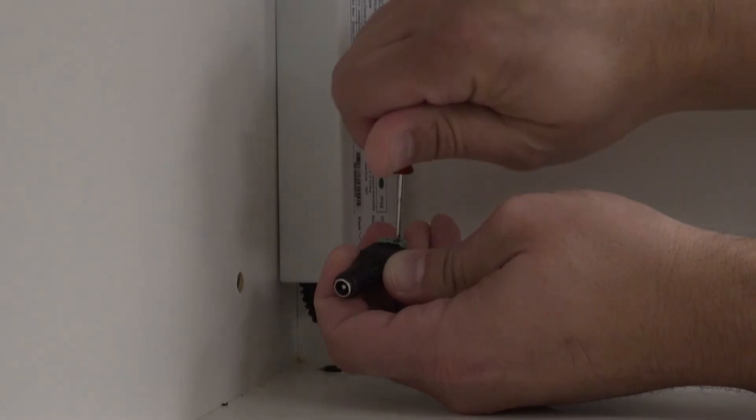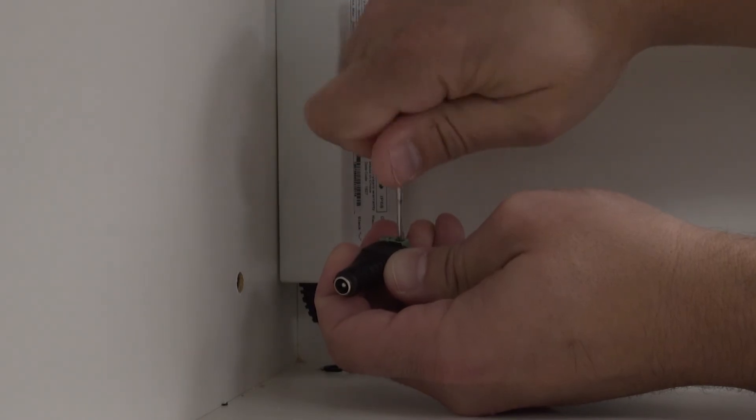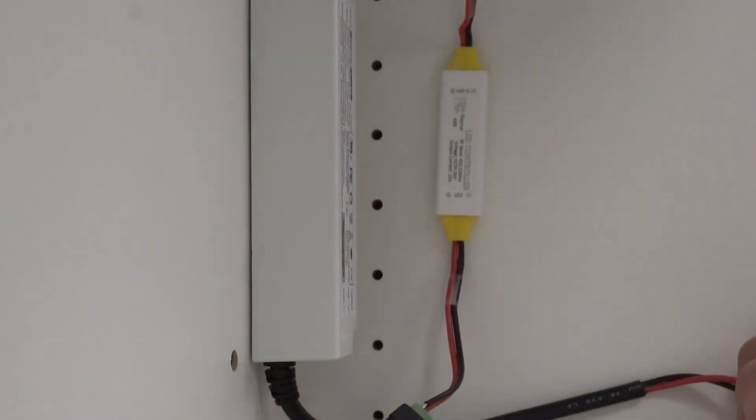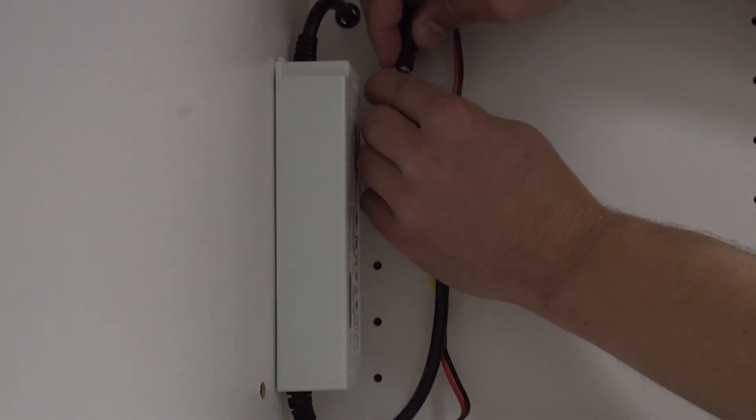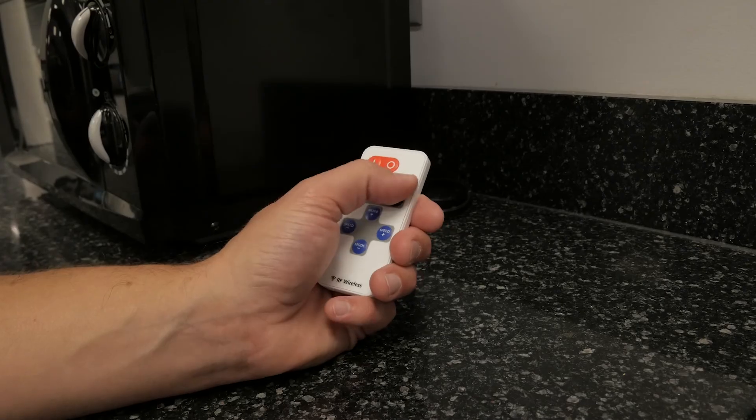With the strip wires fed up, we can now wire them to the RF controller and mount it next to the power supply. You can then plug the power supply into the controller and plug the power supply into the outlet, giving you wireless control of your LED strips.